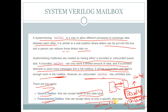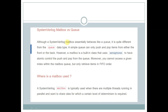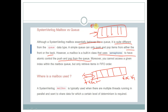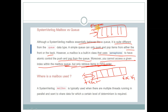SystemVerilog mailbox versus queue: a SystemVerilog mailbox essentially behaves like a queue but is quite different from a simple queue. A simple queue can only push and pop items from either the front or the back. However, a mailbox is a built-in class that uses semaphores to have atomic control to push and pop from the queue. In case of a mailbox it is like a FIFO — we cannot access the individual index, only retrieve items in FIFO order.